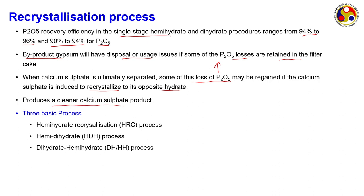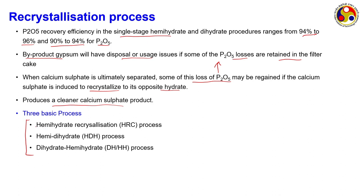Recrystallization produces a cleaner calcium sulphate product. What it means is: calcium sulphate is at a particular state containing P2O5 — to extract that P2O5 you change the nature of the crystals. If it is in hemihydrate, convert to dihydrate; if in dihydrate, convert to hemihydrate. The change in crystal type causes P2O5 to come out of the filter cake. The three basic processes are: HRC (hemihydrate recrystallization), HDH (hemi-dihydrate), and DHH (dihydrate-hemihydrate).